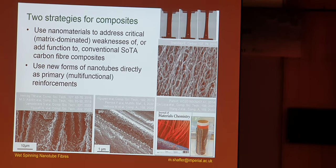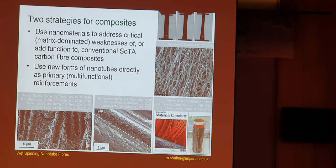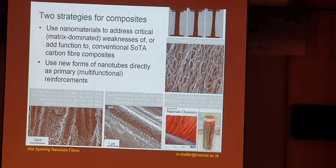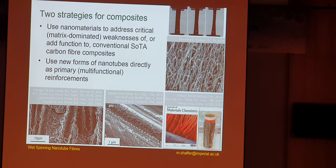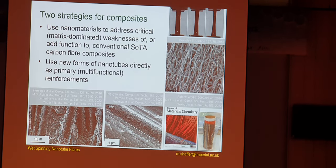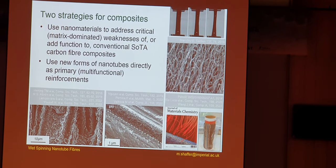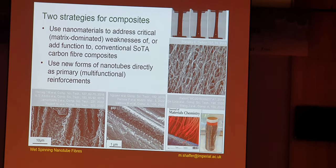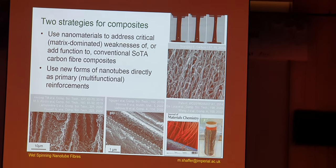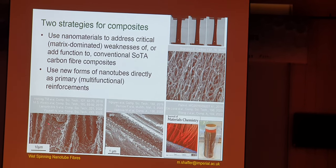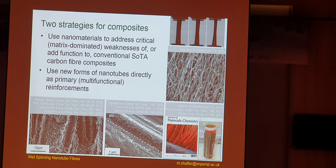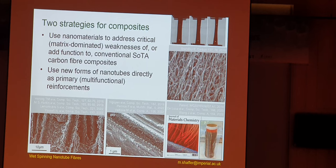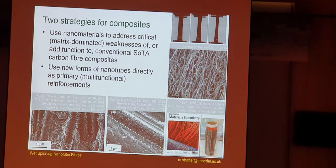First, just a little bit of context for the work. We're thinking about how we might use nanomaterials through structural composites and multi-functional composites. We can think about incorporating nanomaterials to address or improve conventional state-of-the-art lightweight composite materials based on carbon fibers. The other strategy which is more relevant to this meeting is using new forms of nanomaterials directly as some kind of primary reinforcement, some kind of multi-functional system.